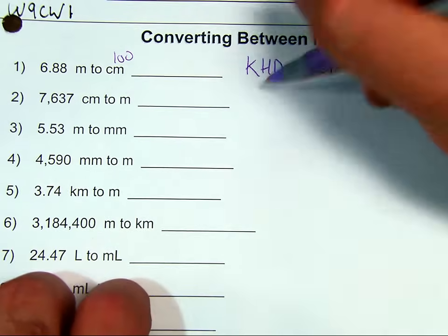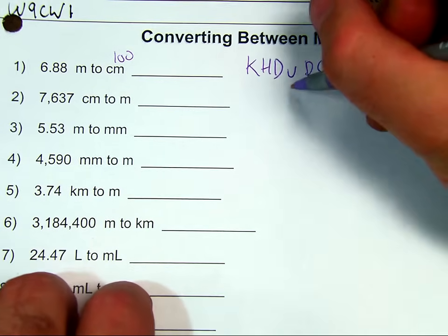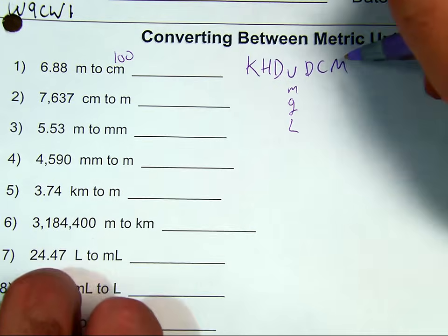This stands for kilometers, hectometers, decameters, your unit, which could be also M, G, or L. Decimeters, centimeters, or millimeters.